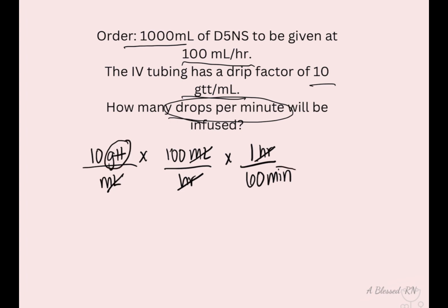You see that your units will cross out — what's on the top crosses out from the bottom — and what you're left with is drops over minutes. Multiply across the top, which equals 1,000, and across the bottom, which equals 60, and divide. Since we can't give 0.666 of a drip, we round up to 17 drops per minute.